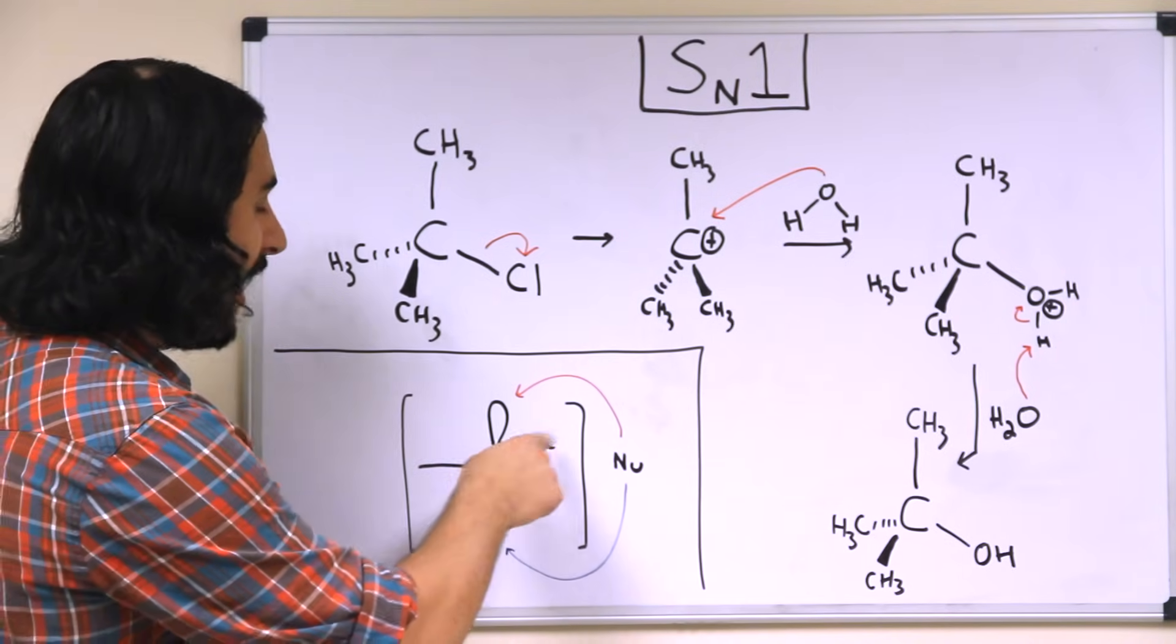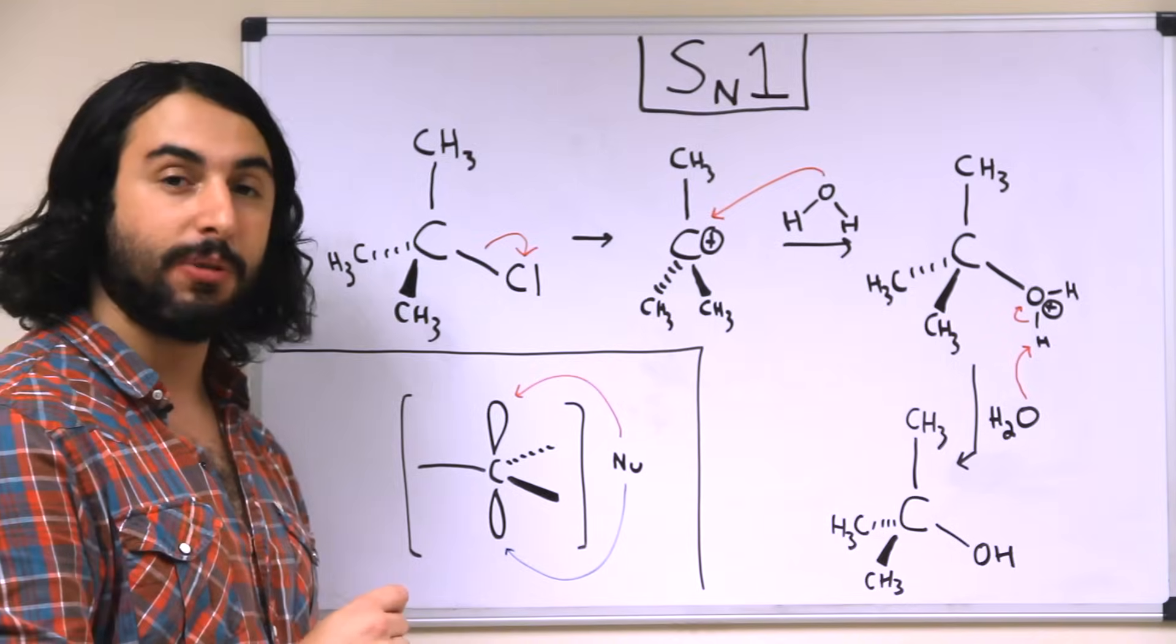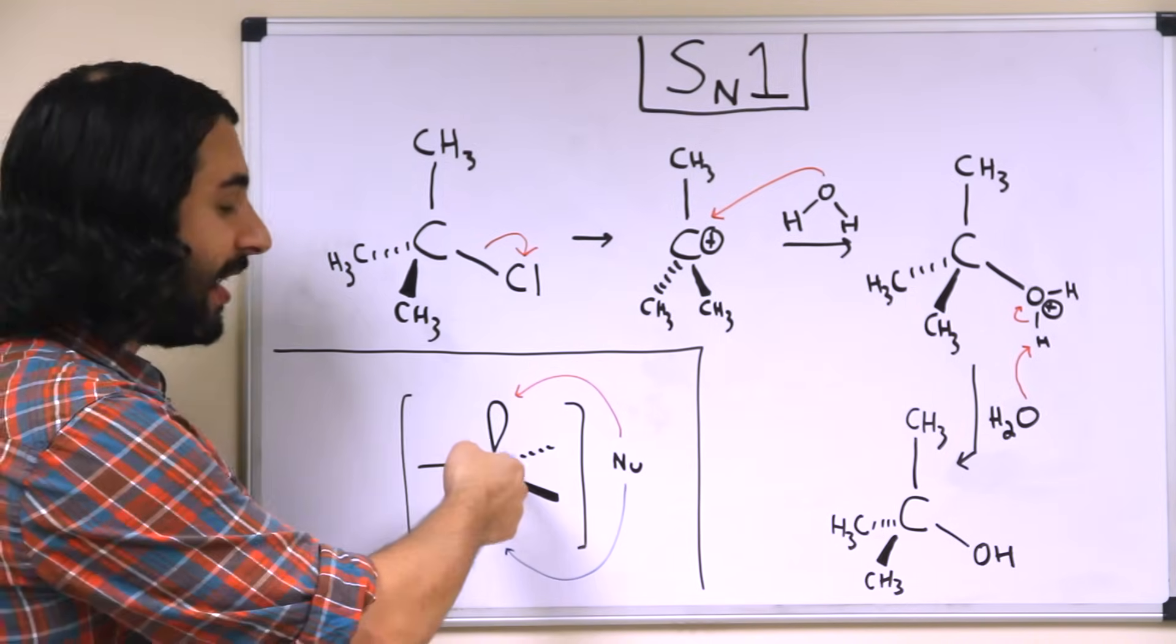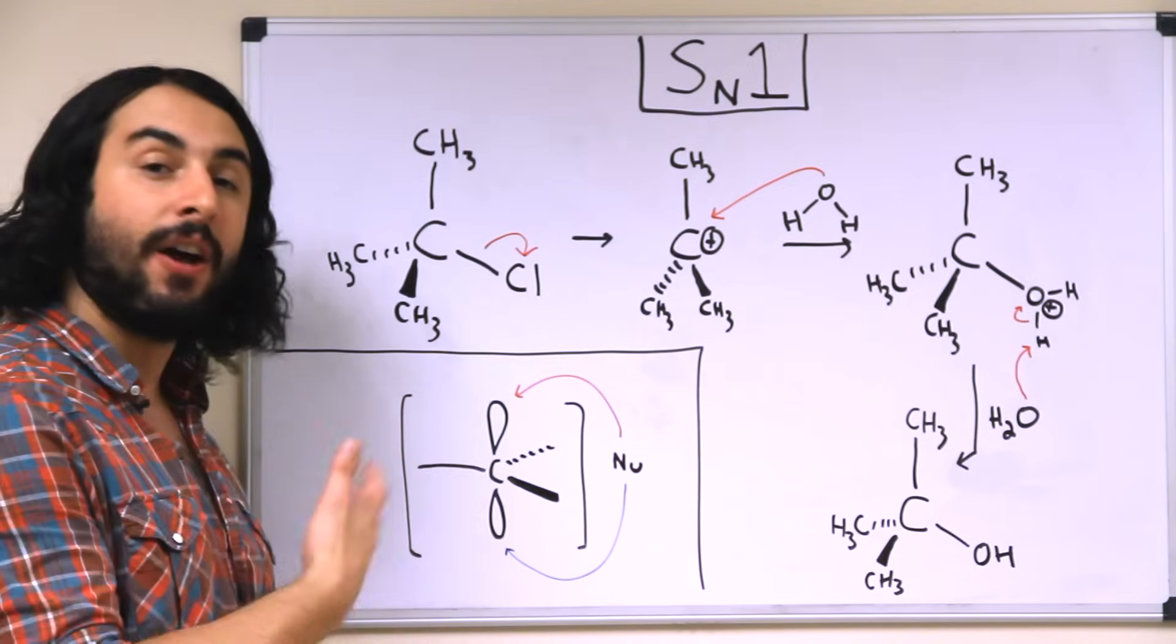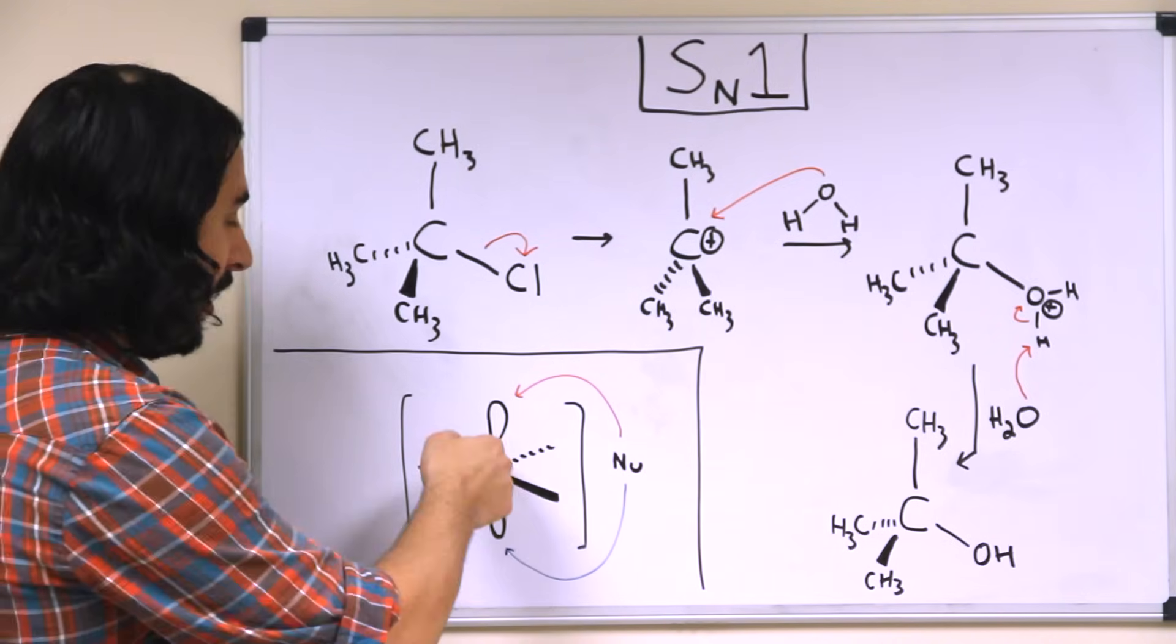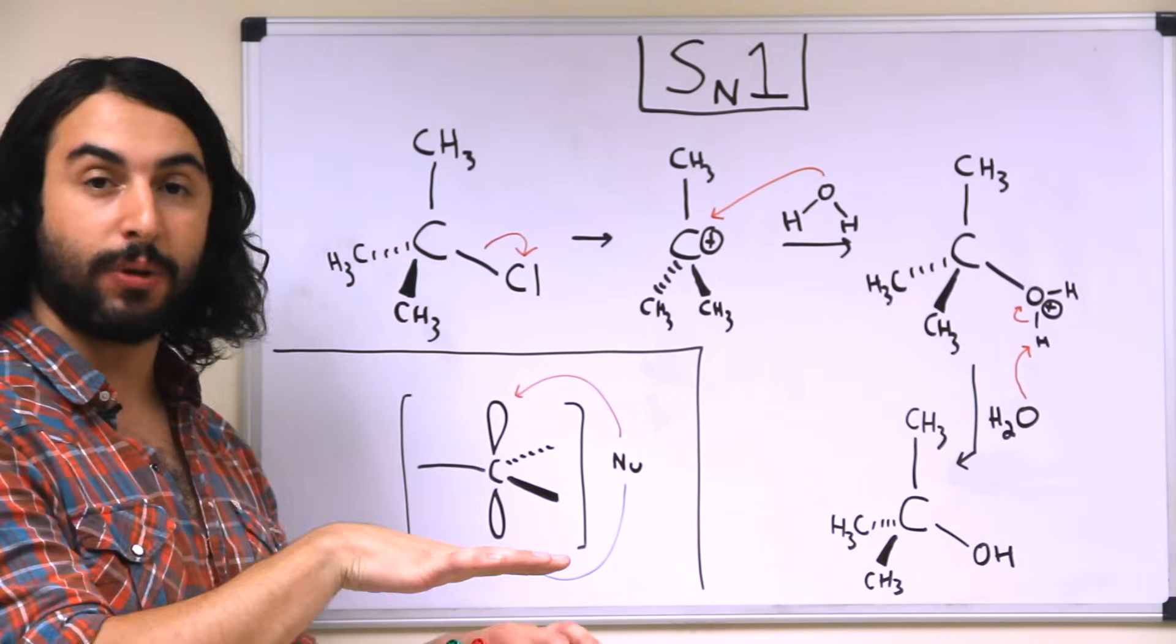And in this case, if we have this trigonal planar situation here, the lowest unoccupied molecular orbital is the unhybridized remaining P orbital. So these are SP2, and then the unhybridized third P orbital is each lobe extending in this direction perpendicular to the plane of the molecule.